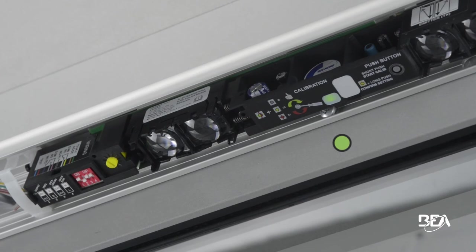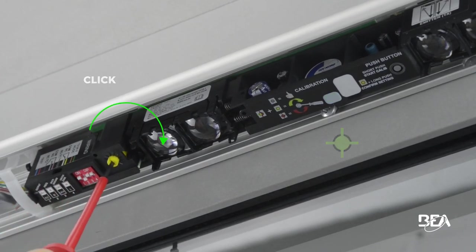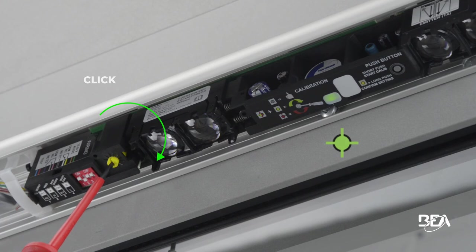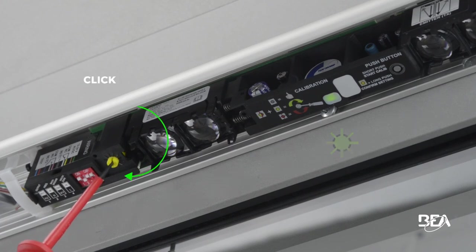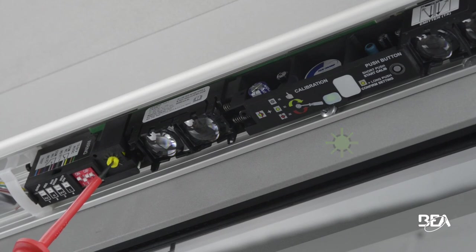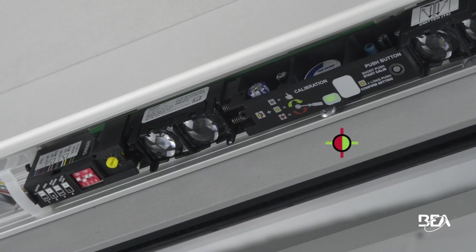If the sensor flashes green, slowly turn the screw clockwise until the sensor flashes red-green. Please turn the screw at a speed of one click per second. The sensor will then blink red and green. Stop turning the screw and the LED will go off.